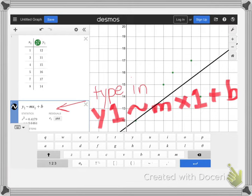After you do that, click on the blank box that's right below your table and type in Y, the number one, tilde sign. In order to get the tilde sign, click on the button that says ABC that's on the keyboard and then you'll see that tilde and it'll be right here, this button right here. Then type in the letter M, type in the letter X, the number one, plus sign, and then type in the letter B to get this.